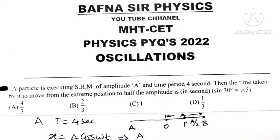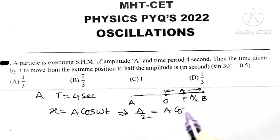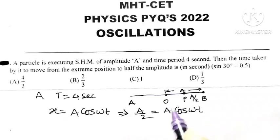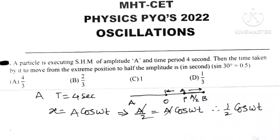Put the value of X is equal to A by 2. So A by 2 is equal to A cos of omega T. This A gets cancelled and we have 1 by 2 is equal to cos of omega T.